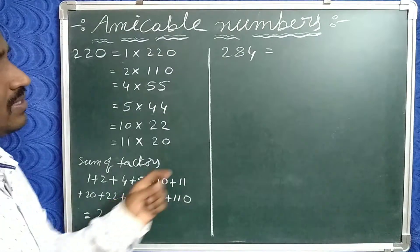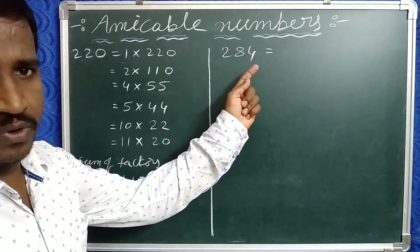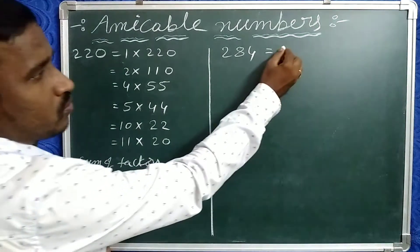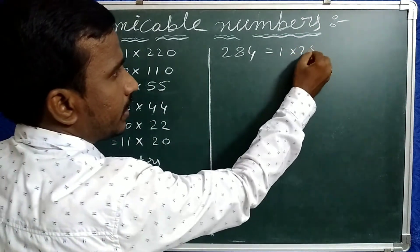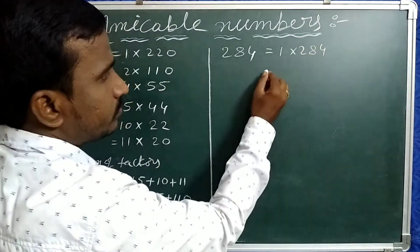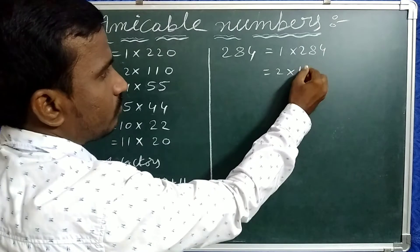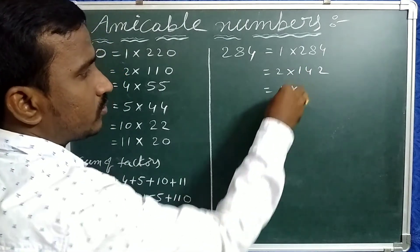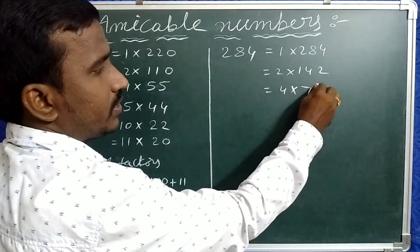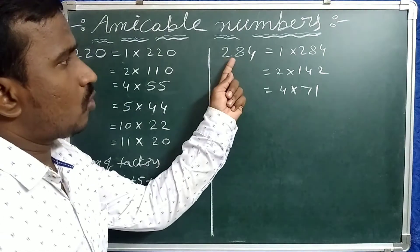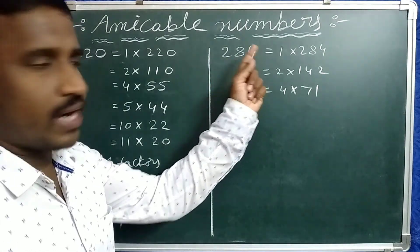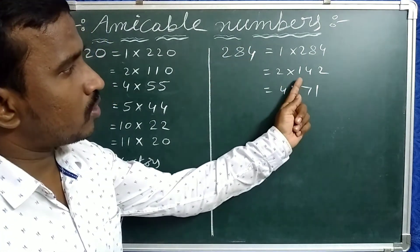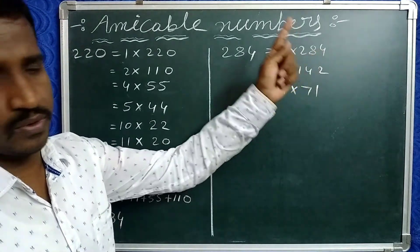Now take 284. The factors of 284 are: 1, 2, 4, 71, 142, and 284.